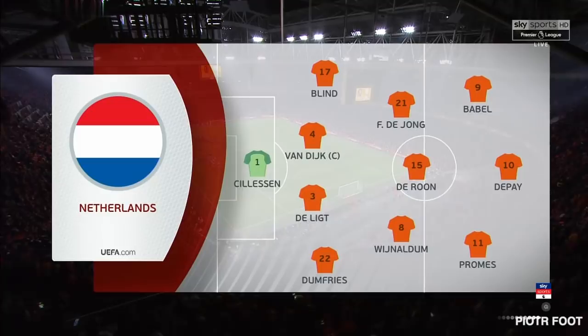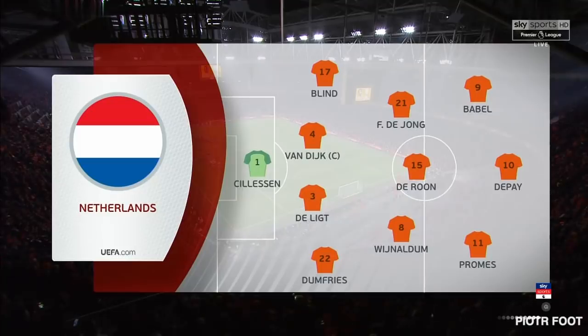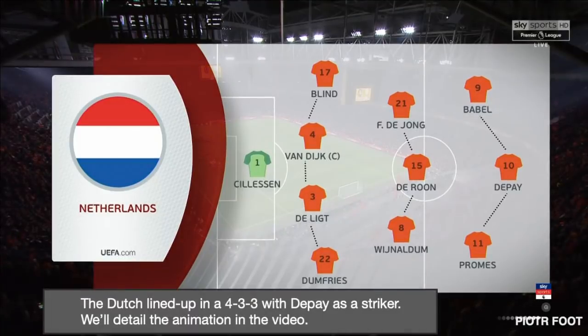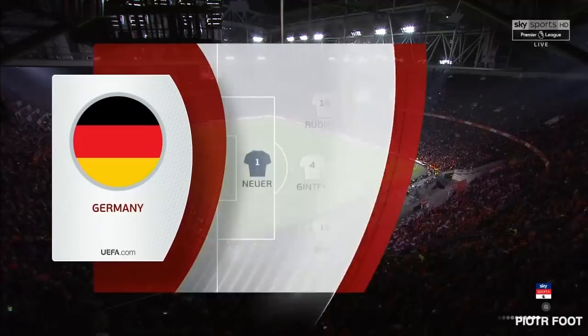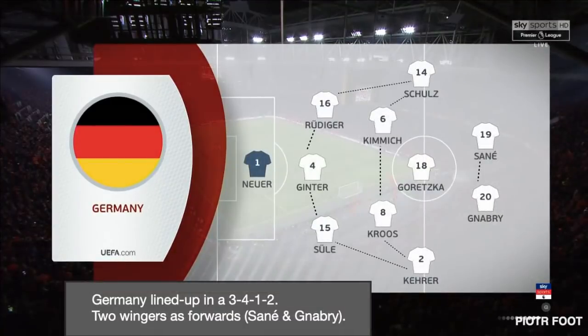So how exactly did they line up? The Dutch side lined up in some sort of 4-3-3, with Memphis Depay as the striker. Germany lined up in a 3-4-1-2 formation. What's interesting here is that Joachim Löw chose two wingers to play as forwards: Sané and Gnabry.